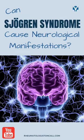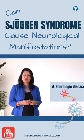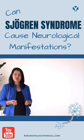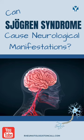Many neurological manifestations may occur in patients with Sjögren's, from peripheral to central nervous system manifestations — from frequent headaches to paresthesias or tingling in the hands or feet, sometimes on one side of the face or other parts of the body.